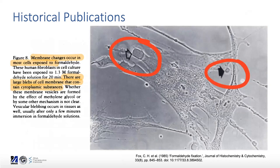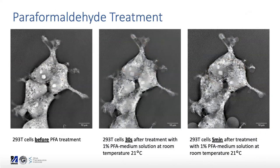Using today's techniques, here is the typical experiment I was doing — taking images of cells before and after the fixation process. Even after 30 seconds following treatment with paraformaldehyde you can see blebs coming up, especially on the top of the image. In the third image on the far right, after five minutes, they are much larger and much easier to identify.